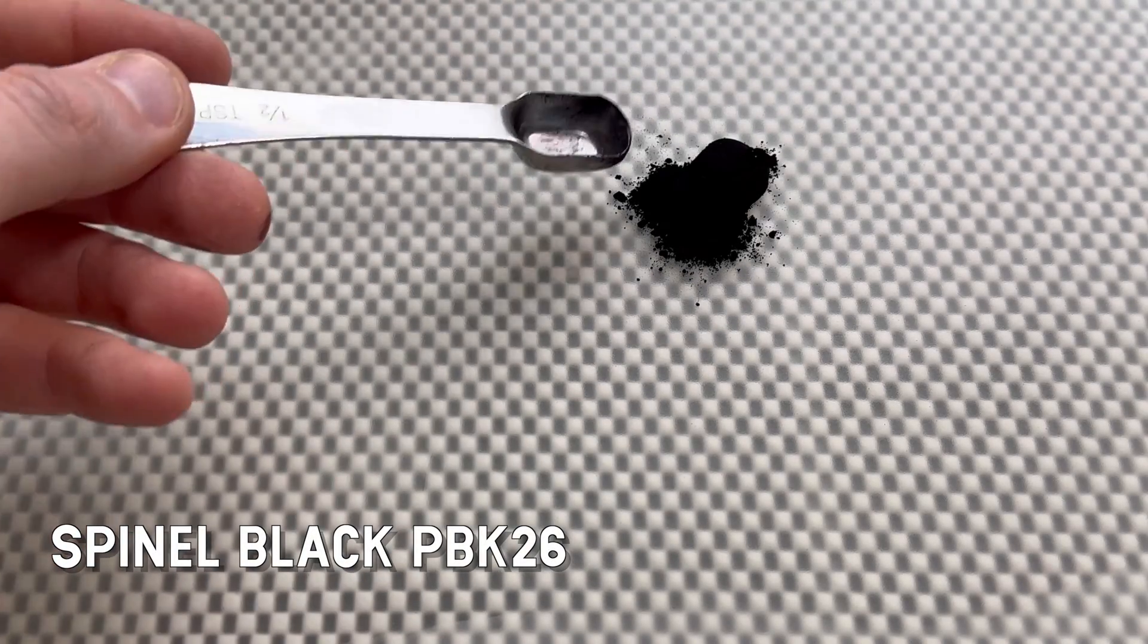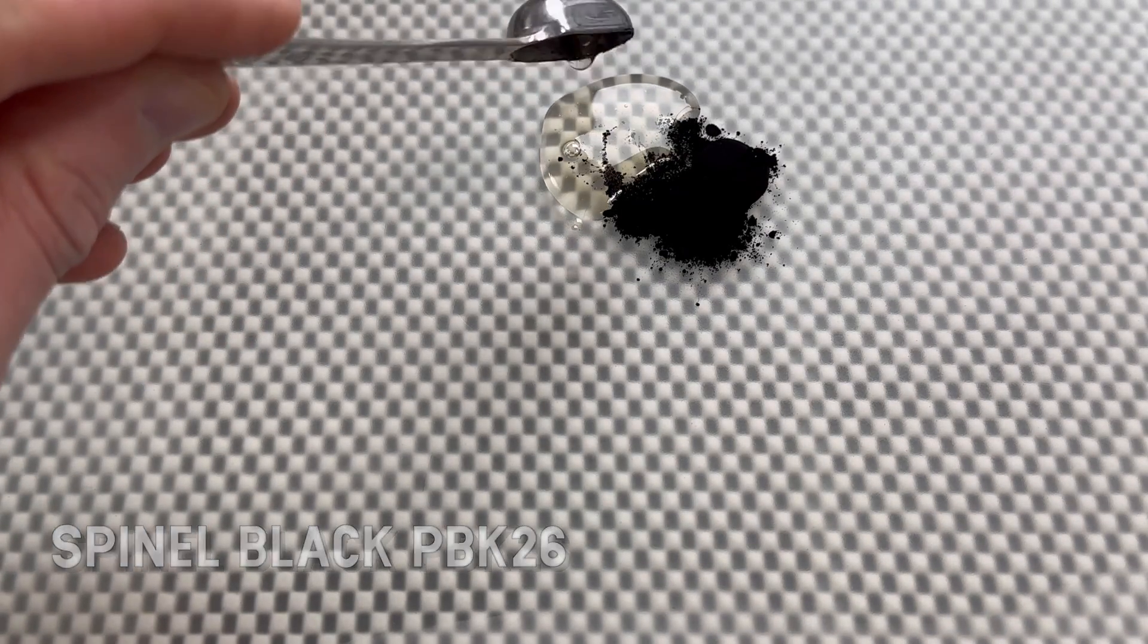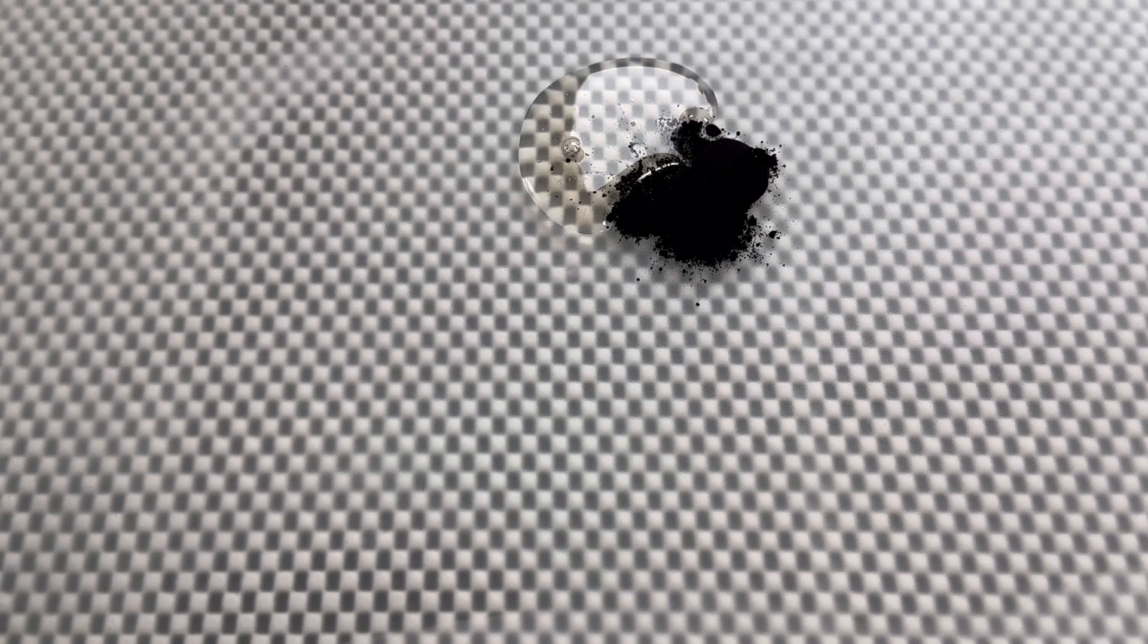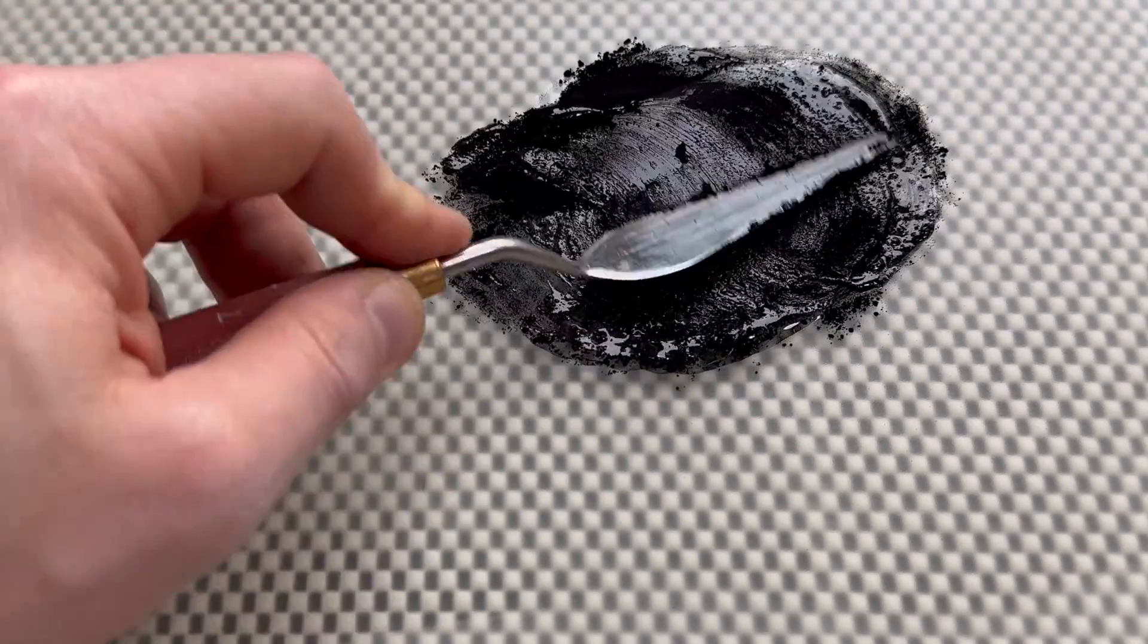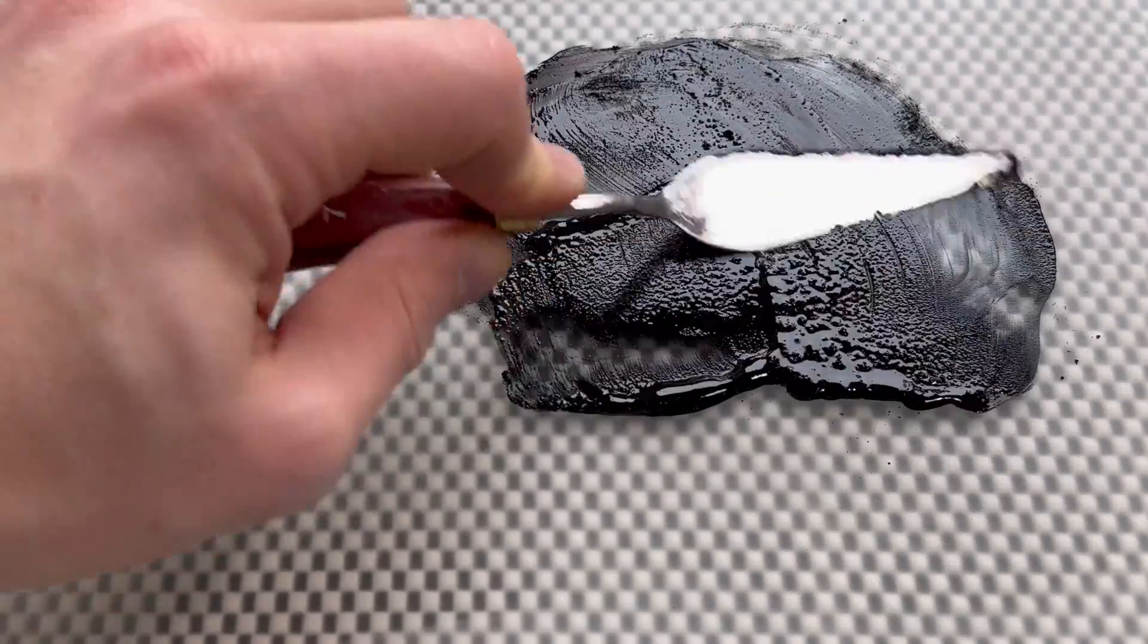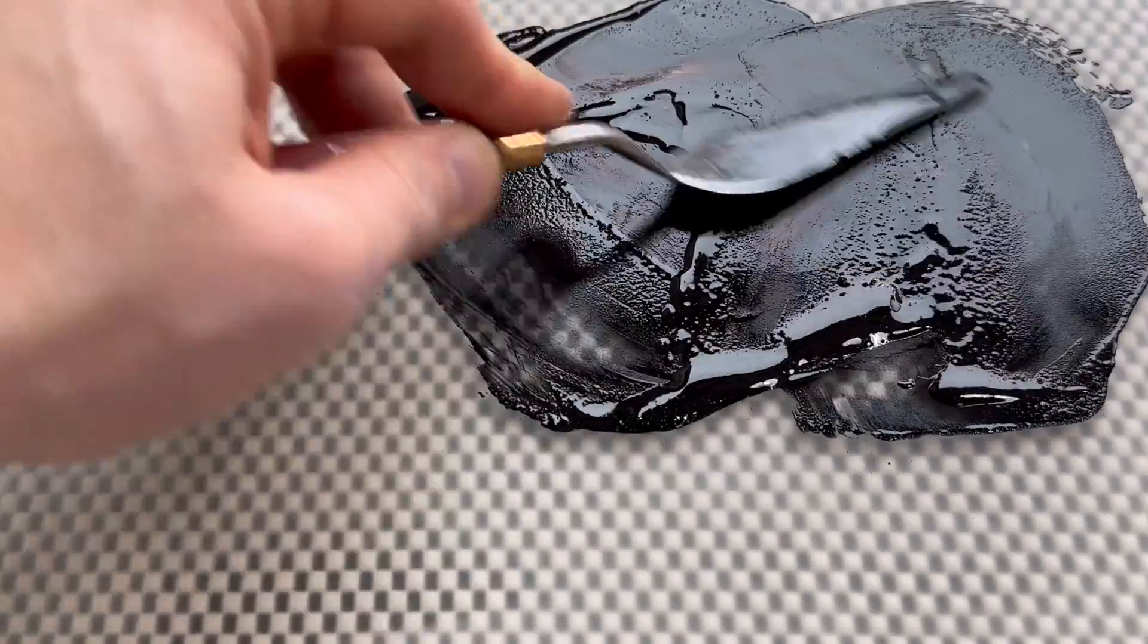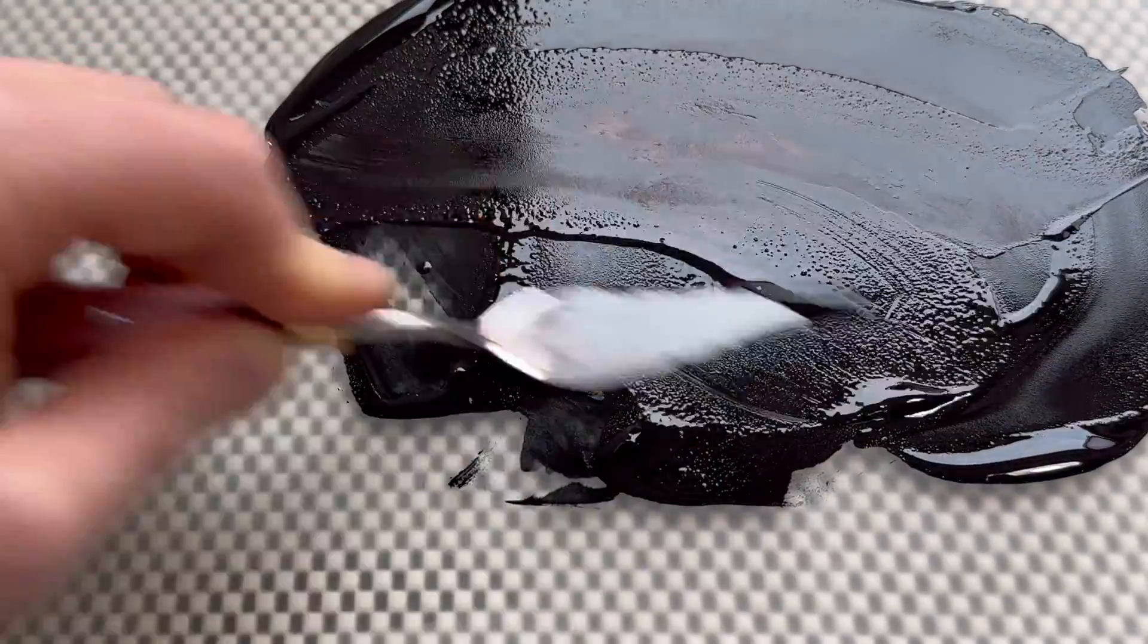Up next is PBk26, spinel black or manganese ferrite black, a true black. What do I mean with a true black? It is something that really doesn't reflect any other wavelengths than just barely nothing. It absorbs most wavelengths, making it something that is closest to a perfect black.